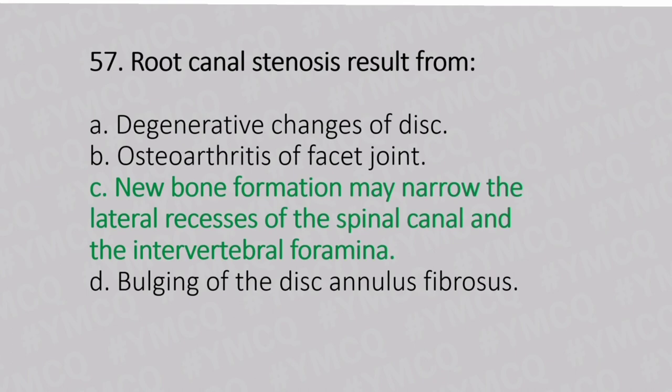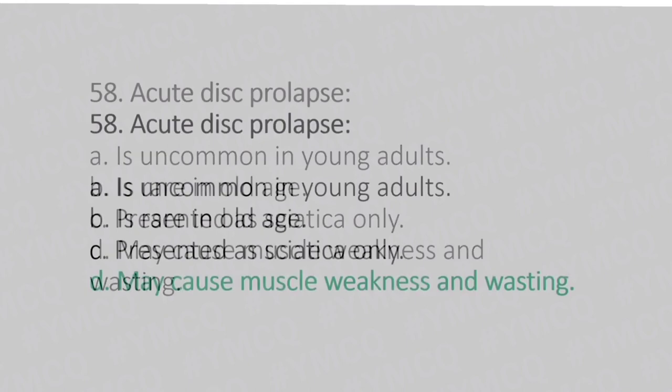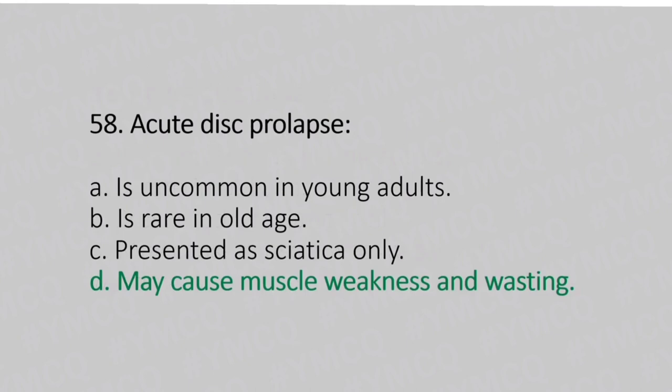Now let's move to question number 58. Acute disc prolapse. Option A: is uncommon in the lumbar region. Option B: is rare in the thoracic region. Option C: presents with sciatica only. Option D: may cause muscle weakness and wasting. And the answer is Option D, may cause muscle weakness and wasting.